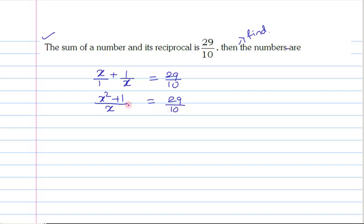Now, on doing cross multiplication, this can be written as 10 of x square plus 1 is equal to 29 into x. Now, on applying distributive property, this can be written as 10x square plus 10 is equal to 29x.